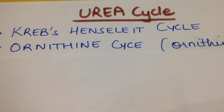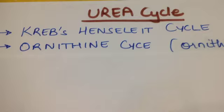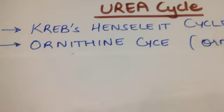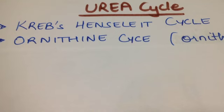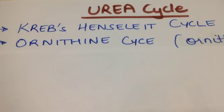Today we are going to learn about the urea cycle, also known as the Krebs-Henseleit cycle or the ornithine cycle. It's called the ornithine cycle because ornithine is regenerated in it. The function of the urea cycle is to detoxify ammonia so that it can be transferred and then eliminated.